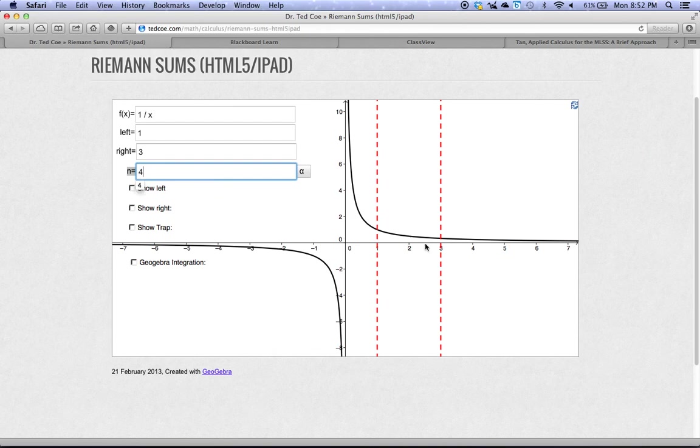Now, what we're going to be doing is putting rectangles in this little area underneath the curve here. Since we're going to use the right-hand endpoint, we're going to click Show Right.